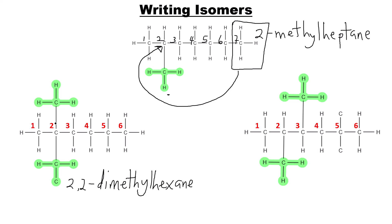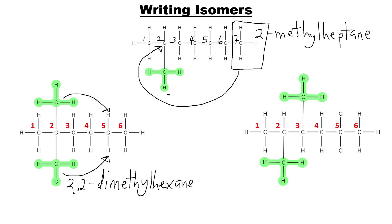Note that someone placing the methyl groups on the equivalent carbon from the right side still gets 2,2-dimethylhexane. After obtaining 2,2-dimethylhexane as an isomer of C₈H₁₈, the next trick is to shift one of the methyl groups. I shift the top one from carbon two to carbon three, giving me a new isomer: 2,3-dimethylhexane.